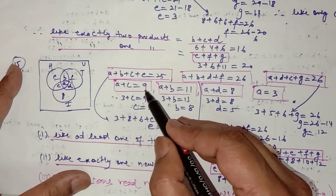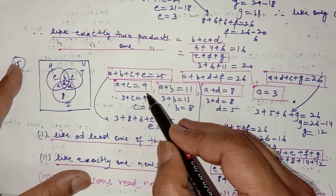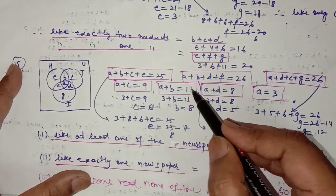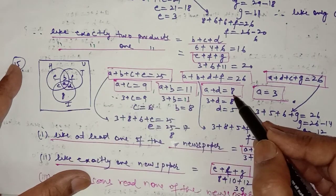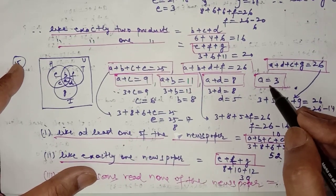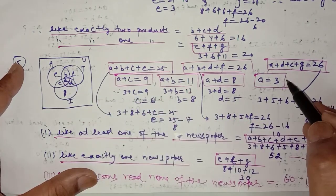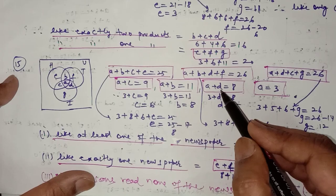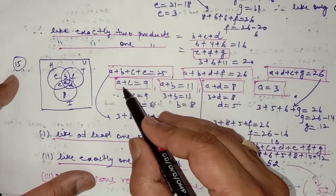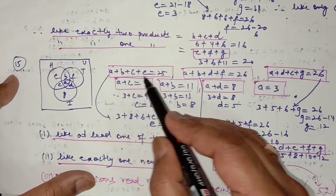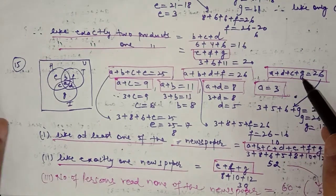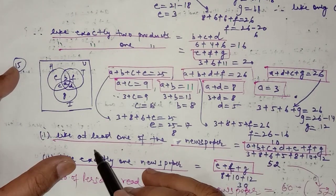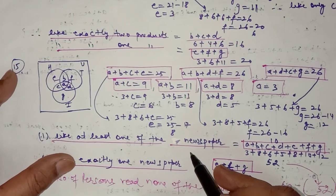It is also given that the number reading both H and I, that is a + c = 9; reading both H and T, that is a + b = 11; reading both T and I, that is a + d = 8; and reading all three newspapers is a = 3. As done in question 16, substitute a = 3 to get d, b, c; then substitute to get e, f, g respectively.